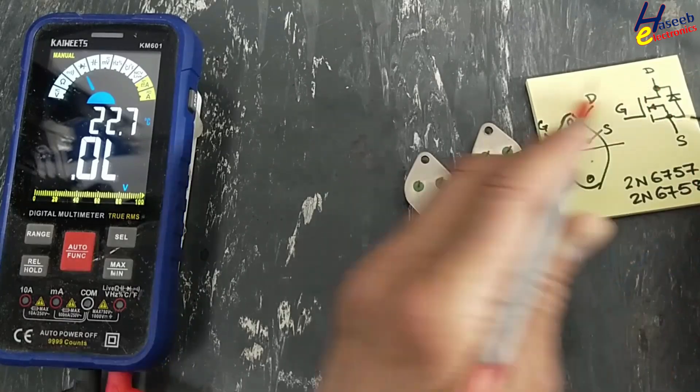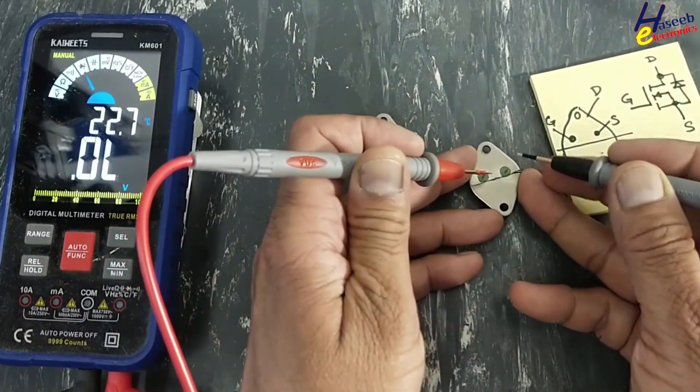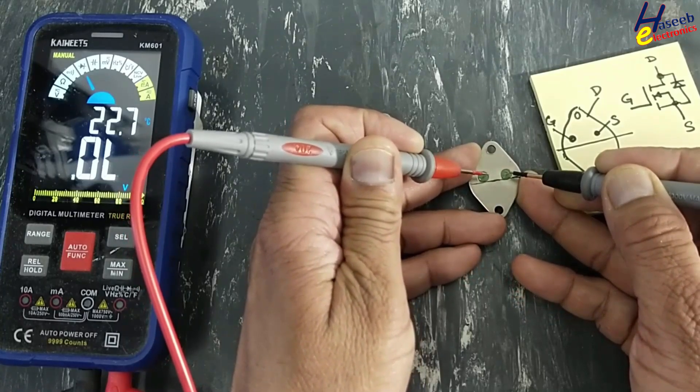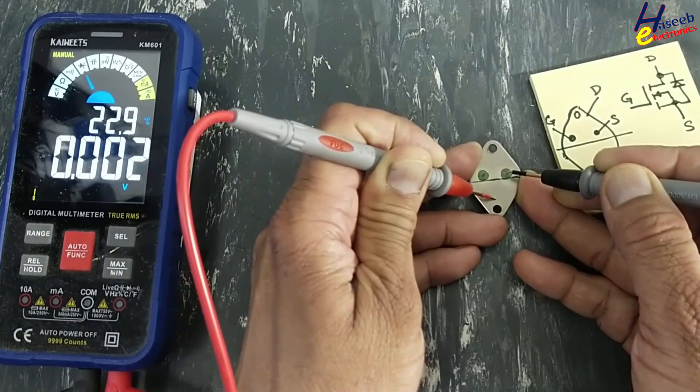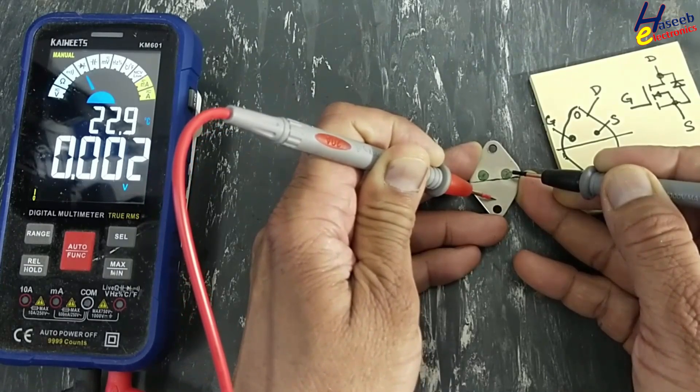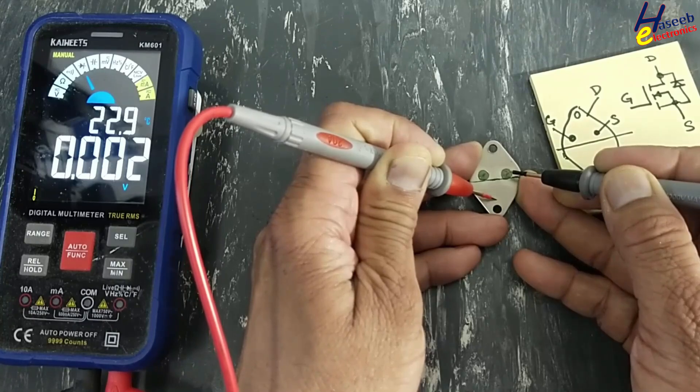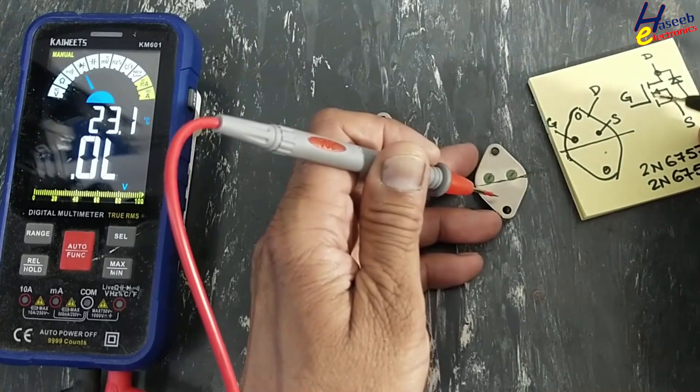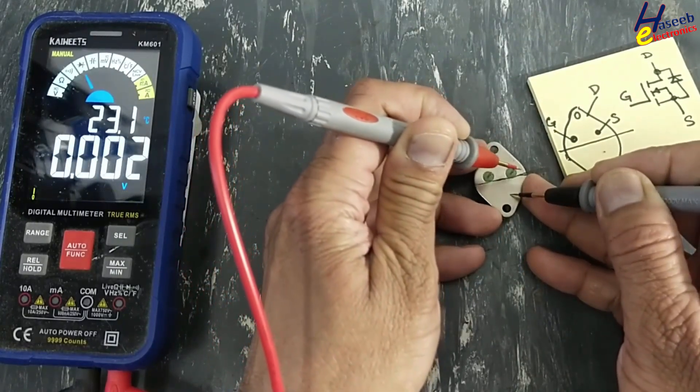Black lead at source pin, red lead touch to gate. Now check with the drain - 0.02 volt drop. The resistance is dropped, the channel is turned on. Reverse the leads, same result - between drain to source this channel is on.